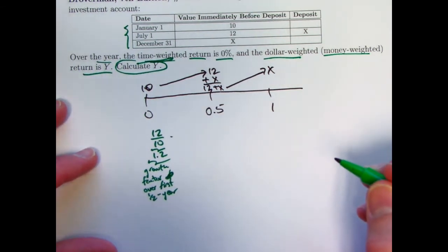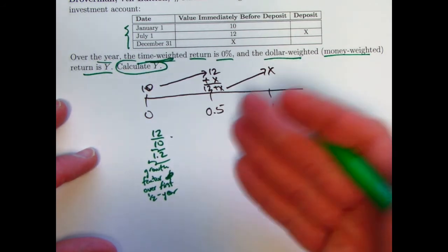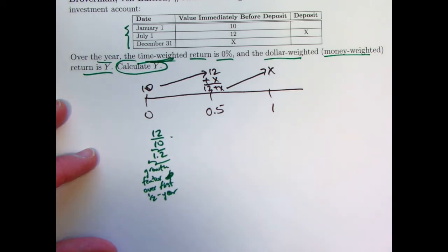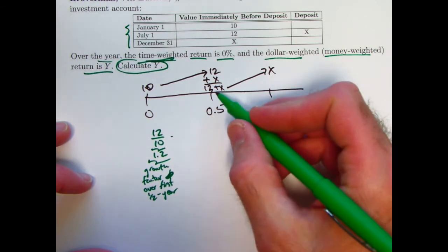Then, for the time-weighted rate of return, you multiply that by the growth factor over the next period of time. And again, the fact that it's a half year in both cases is actually irrelevant. So really calling it time-weighted is kind of confusing. But anyway,